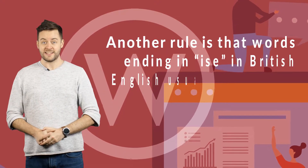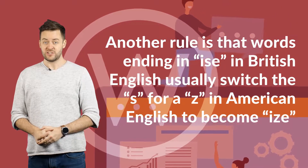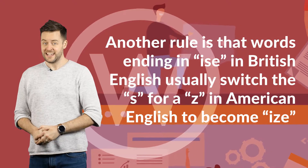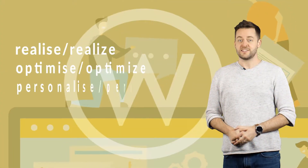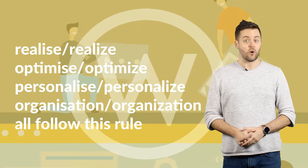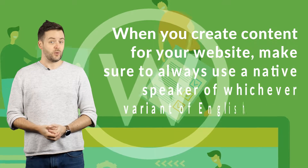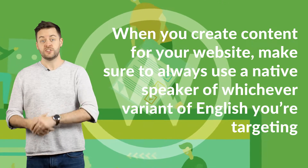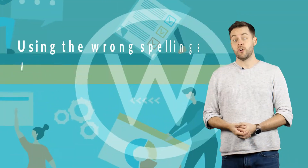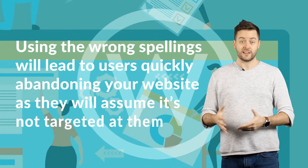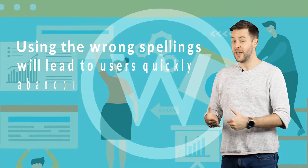Another rule is that words ending in I-S-E in British English usually switch the S for a Z in American English to become I-Z-E. Realise, optimise, personalise and organisation all follow this rule. When you create content for your website, make sure to always use a native speaker of whichever variant of English you're targeting. Using the wrong spellings will lead to users quickly abandoning your website, as they will assume it's not targeted at them.